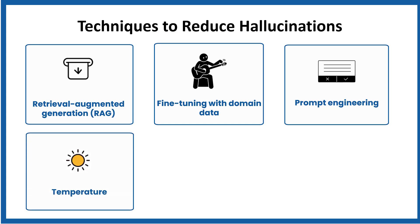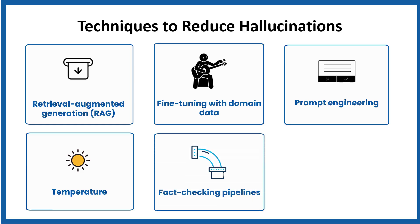Temperature adjustment can reduce hallucinations. Lowering temperature makes the model less creative and more deterministic. This reduces wild guesses but may also reduce diversity. The benefit is more predictable answers; the drawback is it might miss nuanced responses. Adding a fact-checking pipeline can also reduce hallucinations. Add a second layer after the LLM generates an answer — run it through fact-checking APIs or verification models. The benefit is it reduces risk in critical applications. The drawback is it is slower and more computationally heavy.